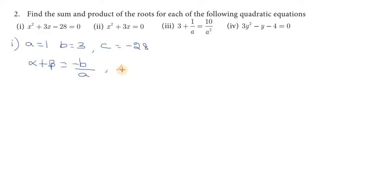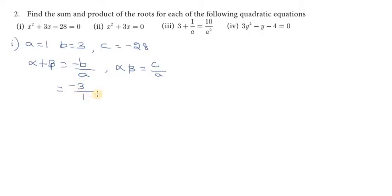Product is equal to alpha into beta. Alpha into beta is c by a. So, if you want to find the product, product is equal to c by a. And then alpha into beta is minus 28. So, alpha plus beta equals minus b by a, which is minus 3 by 1. Alpha into beta is minus 28 by 1.